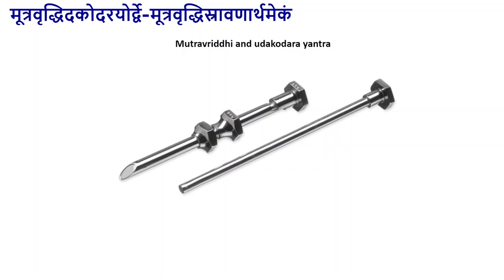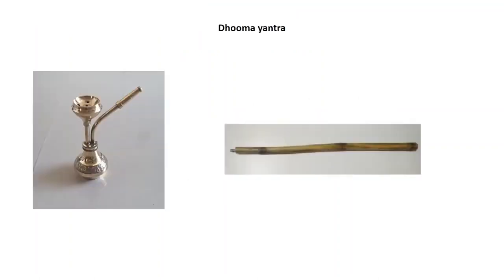The mutravurdhiyantra or dakodhiyantra differ depending on size and dimension. To drain abdominal fluid, the width of the instrument will be more; to drain fluid from a hydrocele, the width will be lesser. The IV cannulas we use now are a similar instrument — a combination of trocar and cannula — and are a derivation of the same principle.